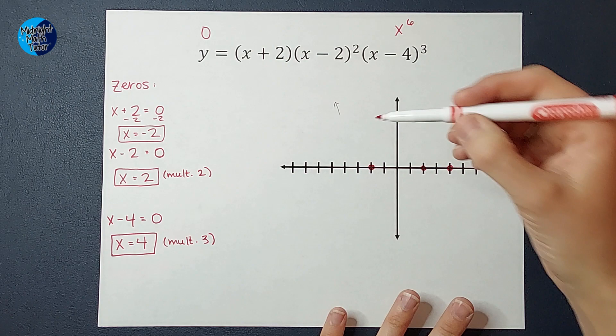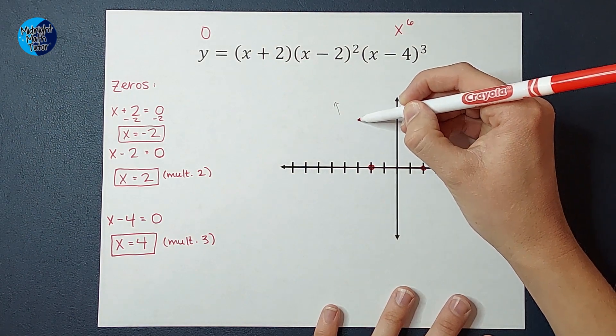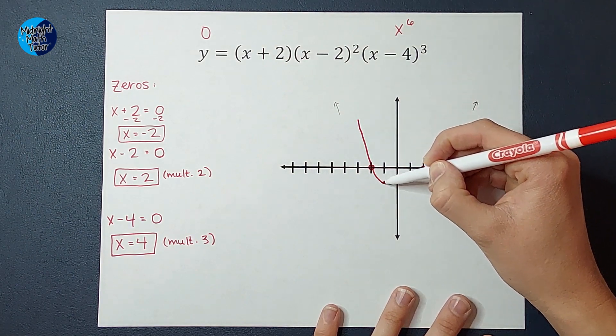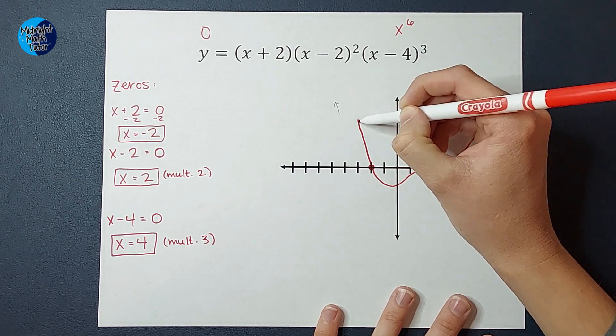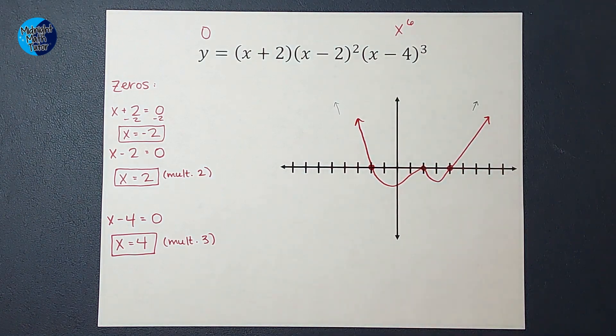So it's going to kind of be like a weird-looking W. So we're going through, bounce, and through, and up. And that is approximately what that graph will look like.